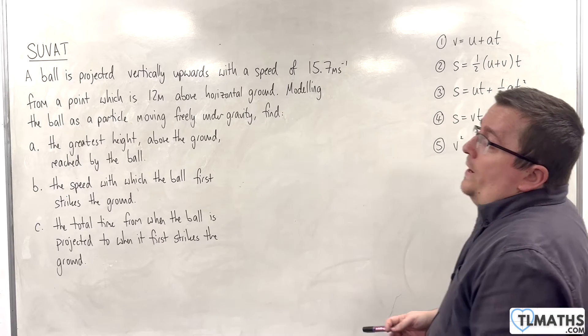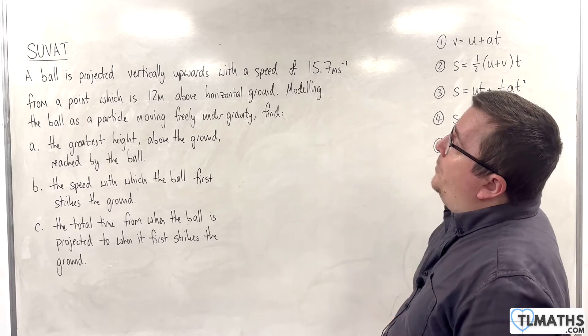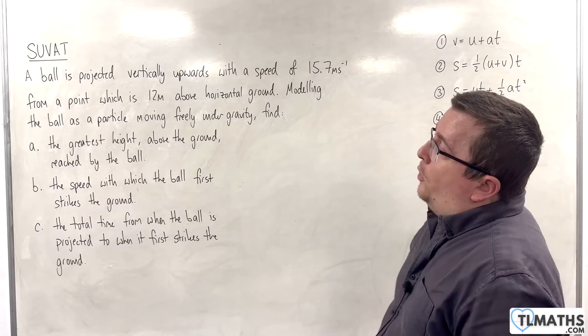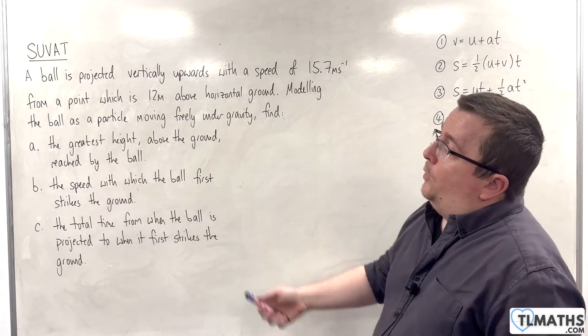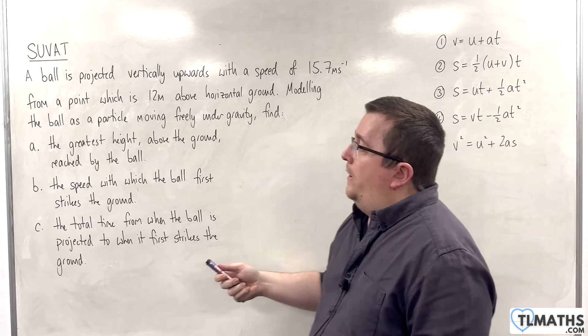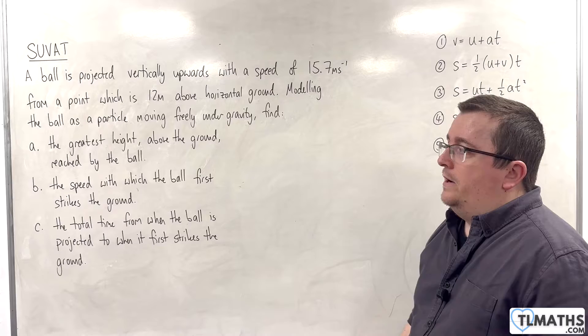So, in this example, we have a ball projected vertically upwards with a speed of 15.7 metres per second from a point which is 12 metres above horizontal ground. Modelling the ball as a particle moving freely under gravity, find, first of all, the greatest height above the ground reached by the ball.